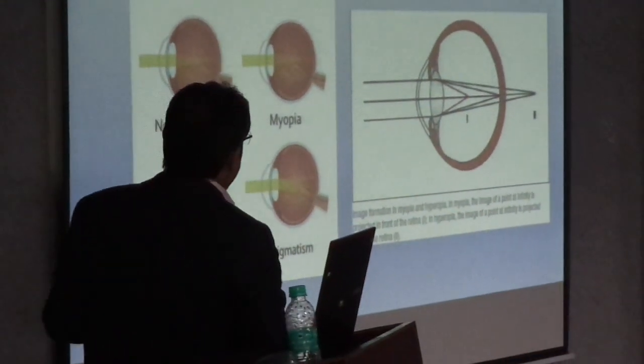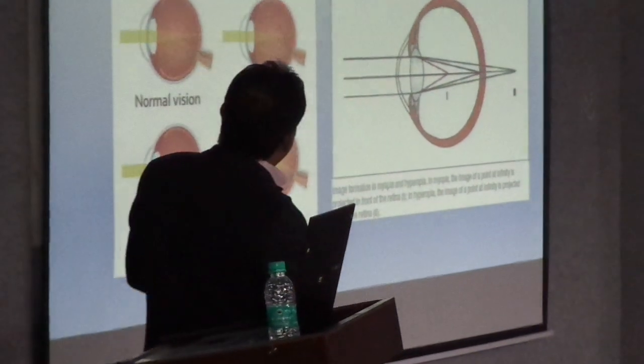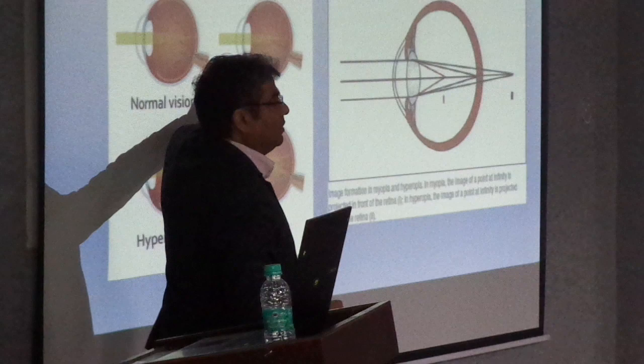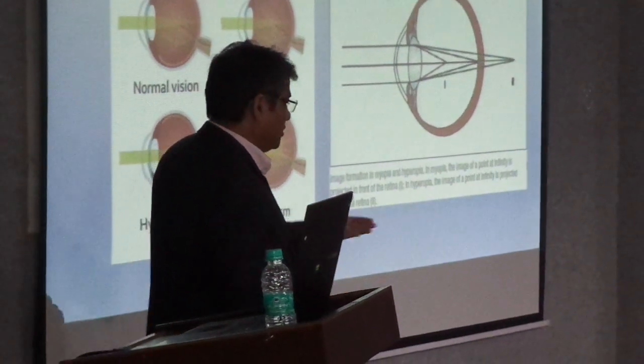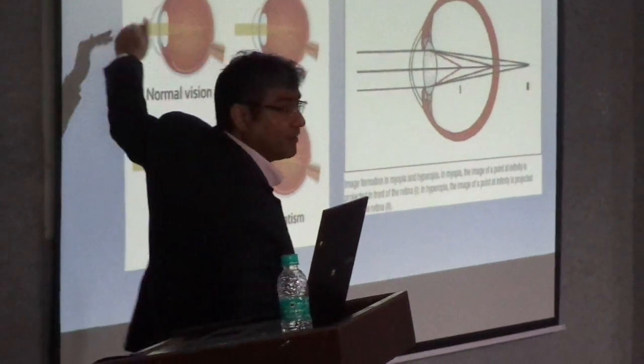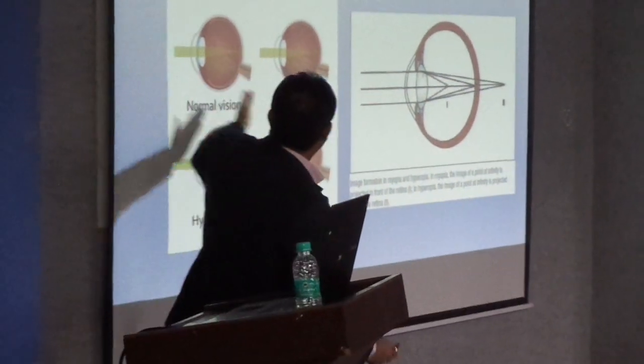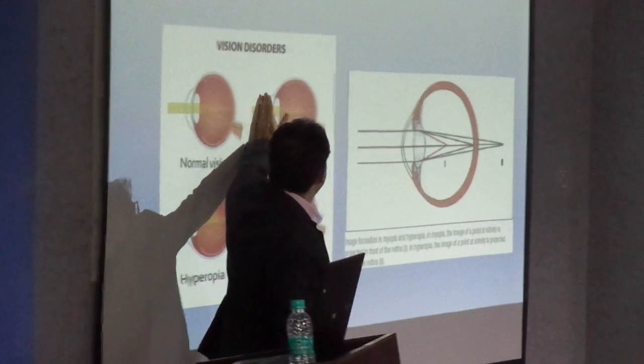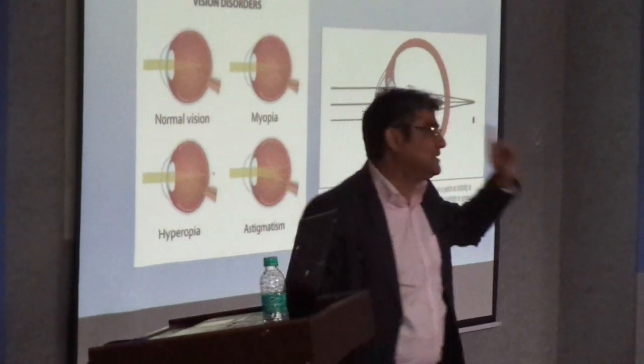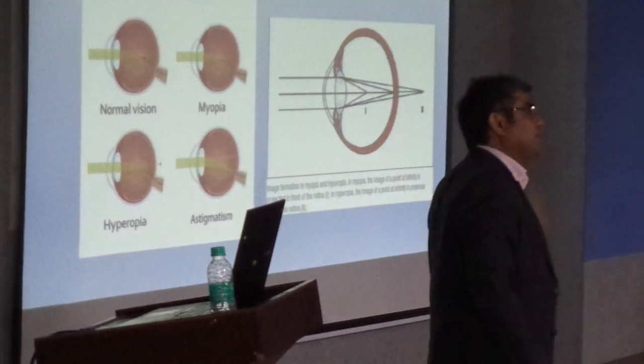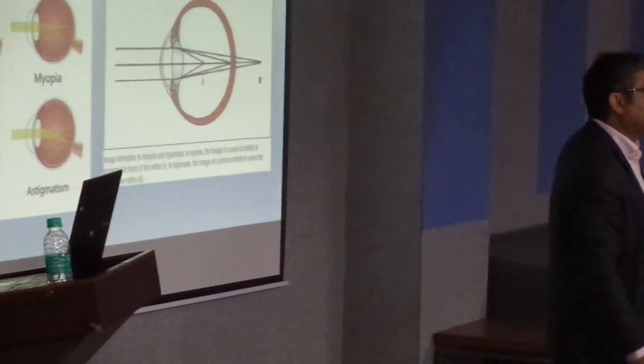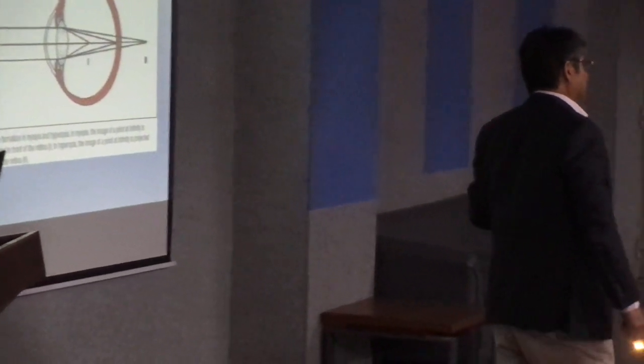So dhyan se sochna, yehaan yehi patient jab paas ki cheeze dekh raha ho ga, right? So yeh cheeze hai, yeh door se, yeh paas infinity se aara hai, light ray hai. Yeh infinity se aara hai. Ab yeh light ray uđtha ke paas meh rakhde, so yeh light ray haa focus ho raha jayegi. So myops ko haemesha paas ki cheeze aachhi dhikhi hai. That is why myops are called short sighted. Thik hai? Kyonki unhye paas ki cheeze saf dhikhi hai.